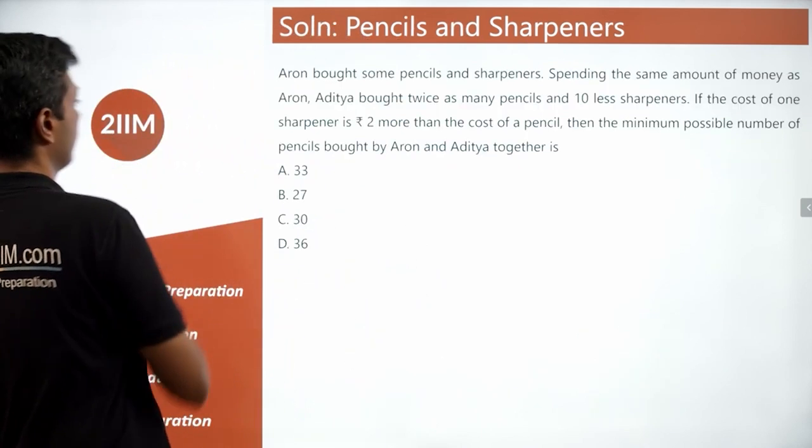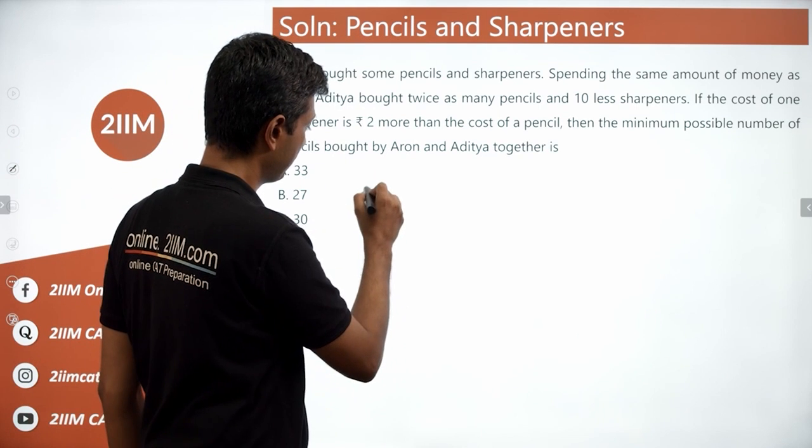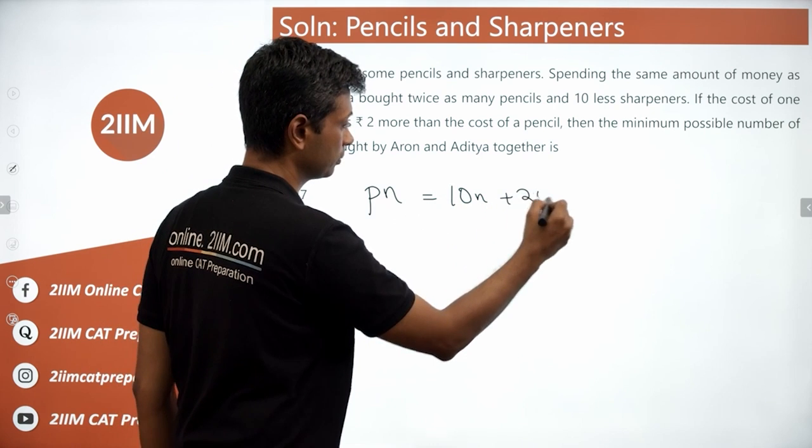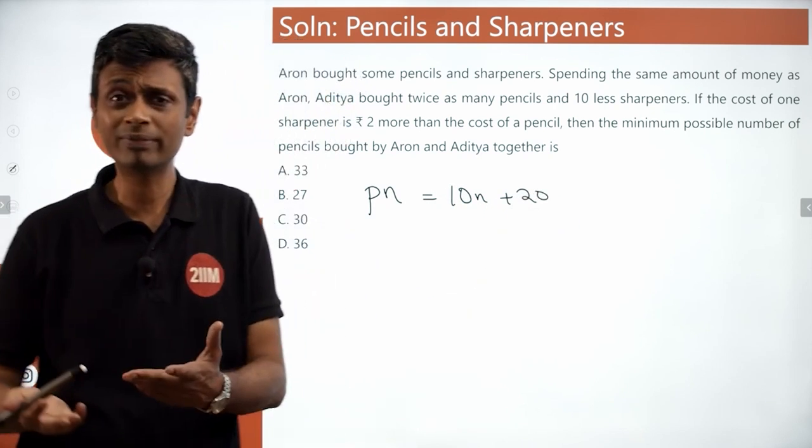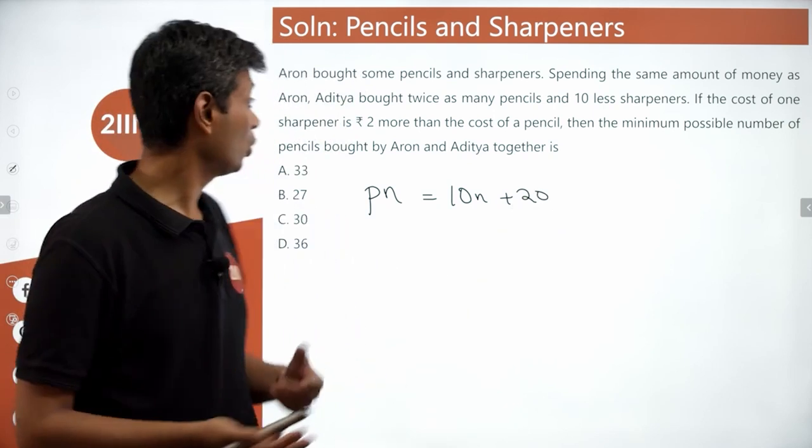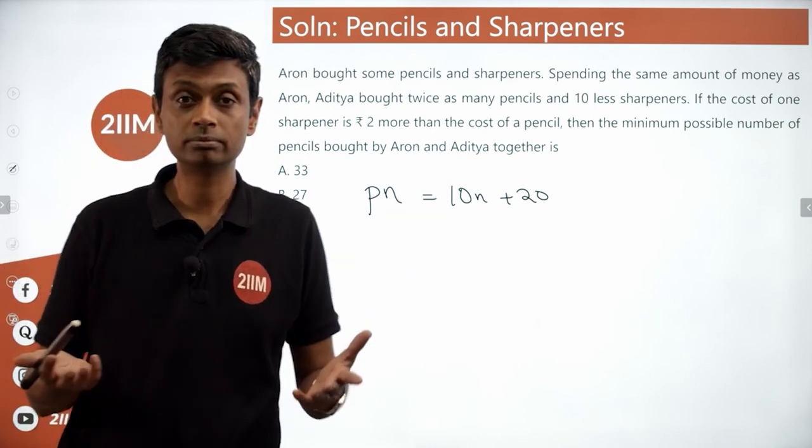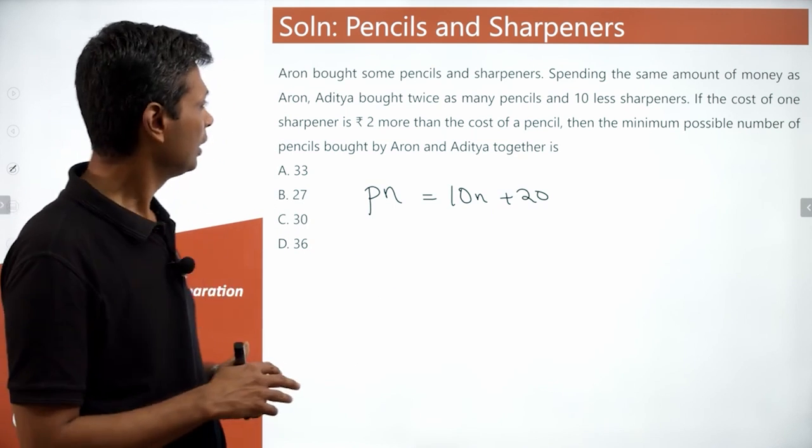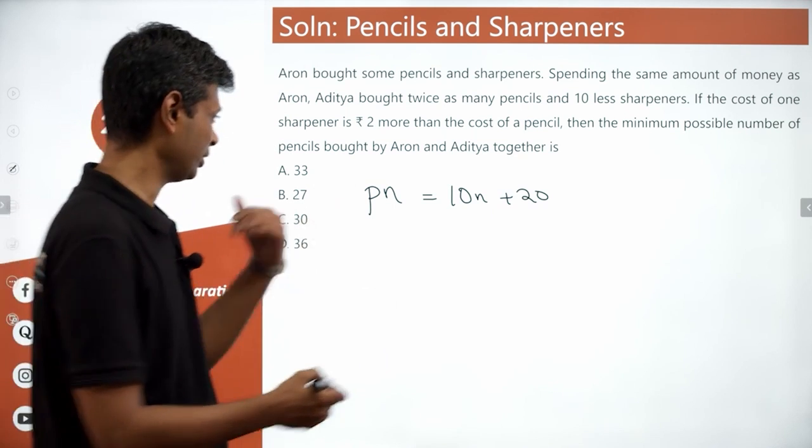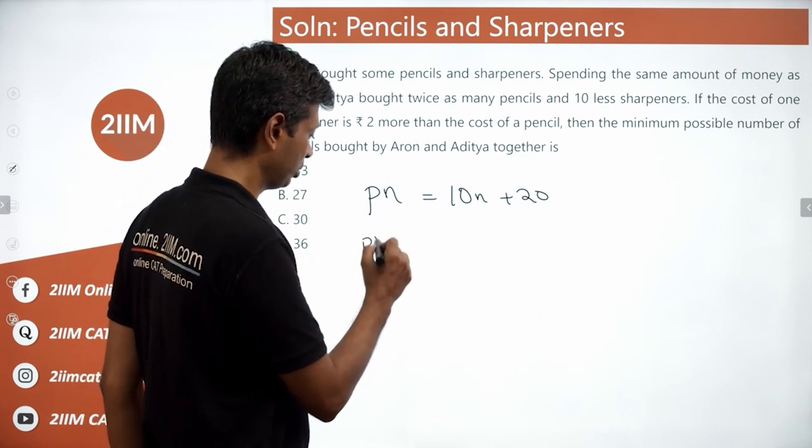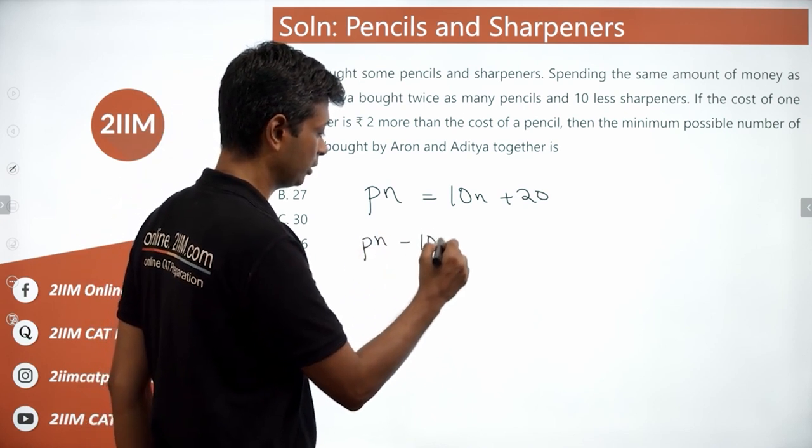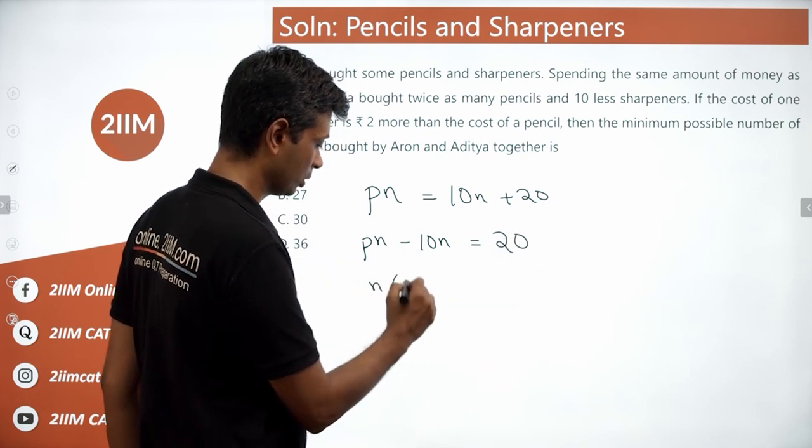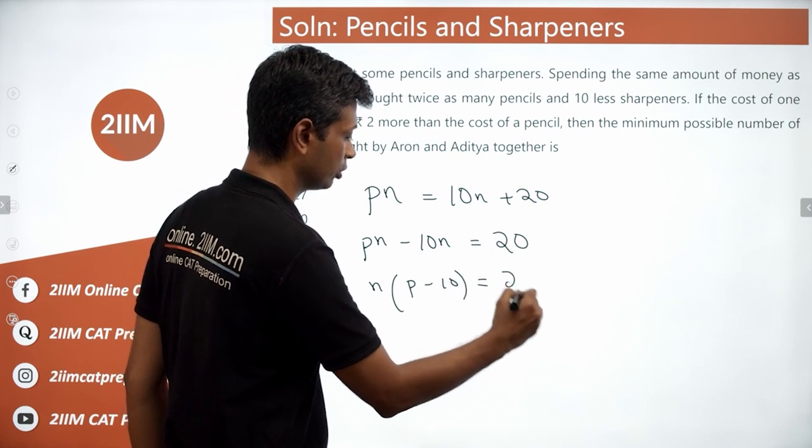P n equals 10 n plus 20. Obviously quite a few values of P n could satisfy this. Let's bring this over to this side. P n minus 10 n equals 20, or n into P minus 10 is 20.